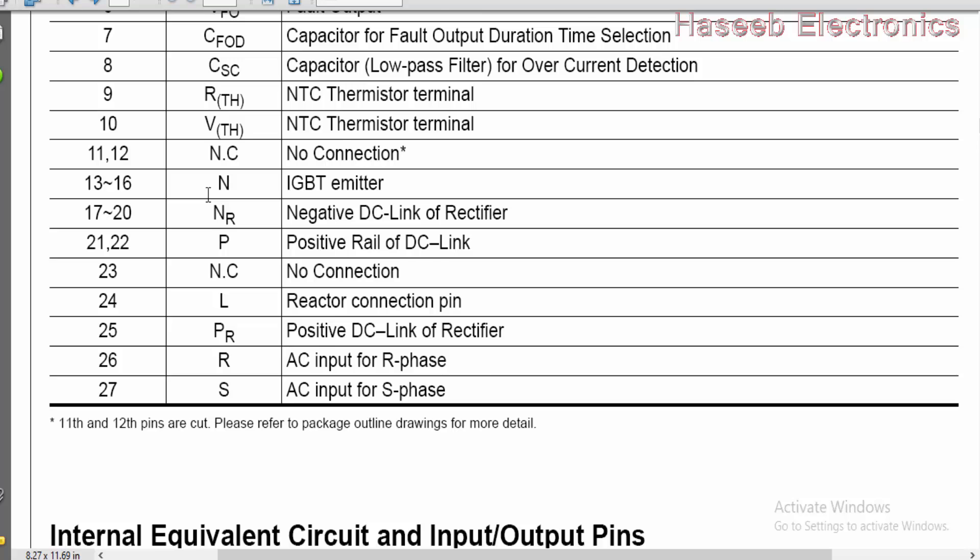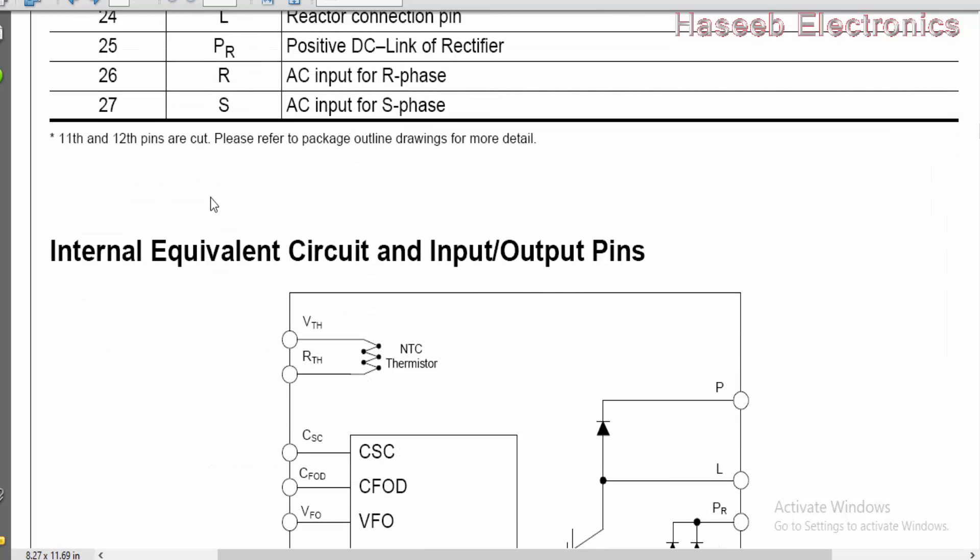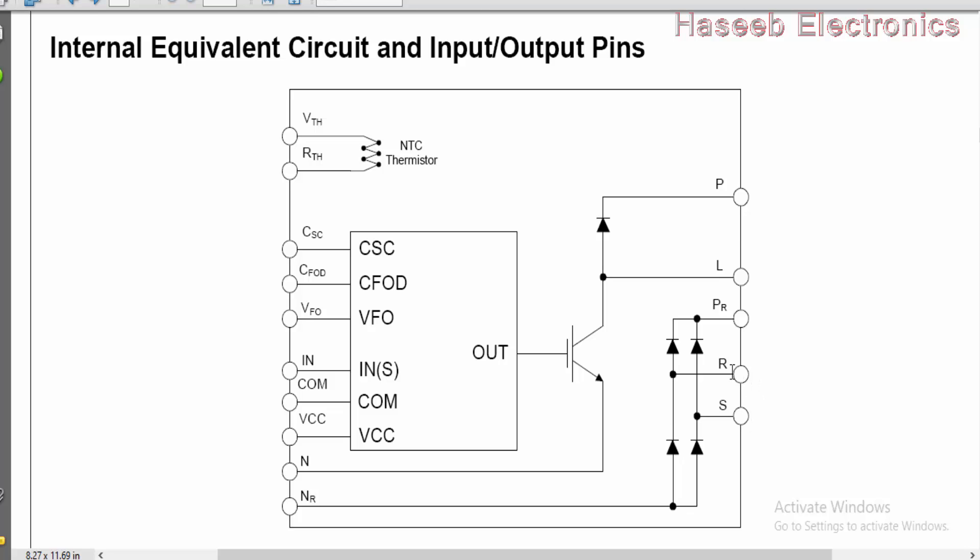The positive output of the bridge rectifier. So this is the pin configuration and here is pin definition in the next page. I will attach this data sheet in the description. As I discussed pin 26 and 27 R and S, line and neutral are connected at these two pins. And the positive output of this bridge rectifier is PR, positive rail. And negative rail pin number 17 to 20. And here we have IGBT. Pin 13 to 16. It is the emitter of this IGBT. And L pin that's inductor pin. So this pin is output or collector pin of this IGBT. And here we have final output rectifier for this PFC circuit.